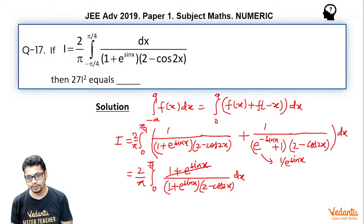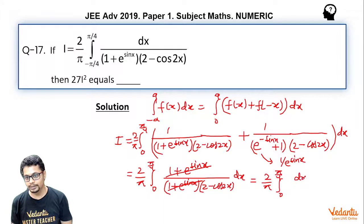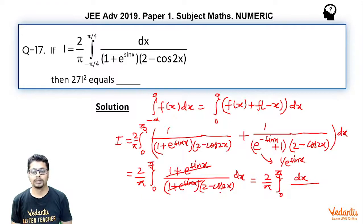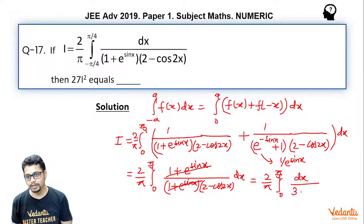The (1 + e^(sin x)) terms cancel out, leaving I = 2/π ∫₀^(π/4) dx/(2 − cos 2x). Writing cos 2x as 2cos²x − 1, the denominator becomes 2 − (2cos²x − 1) = 3 − 2cos²x.